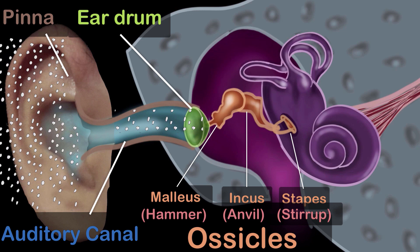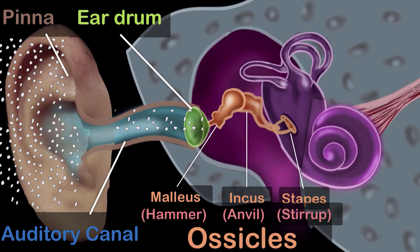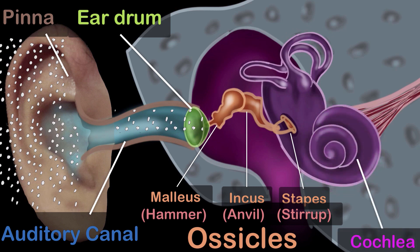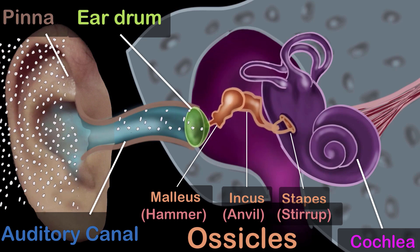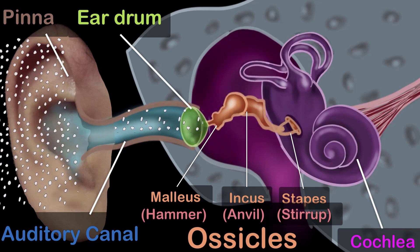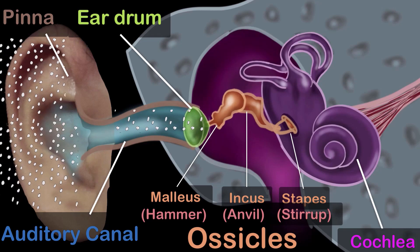That brings us to the inner ear. The inner ear consists of a bony structure, shown in purple. As you can see, the top part of this structure consists of three semicircular rings. They help us in maintaining our balance when walking or dancing, so they're not involved in hearing. The part involved in hearing is this snail-like structure called the cochlea. Although these bones have already started dancing to the music, nothing gets heard until these vibrations are converted to electricity and sent to our brain.